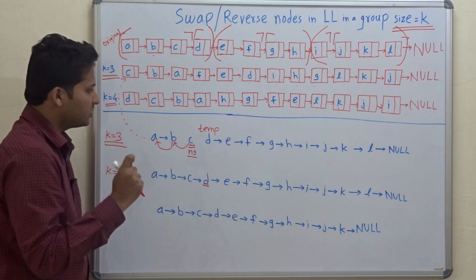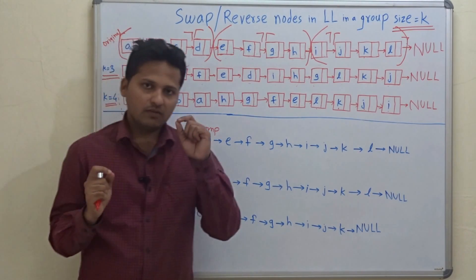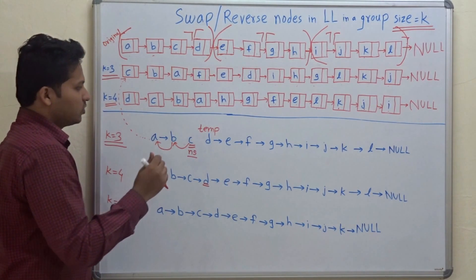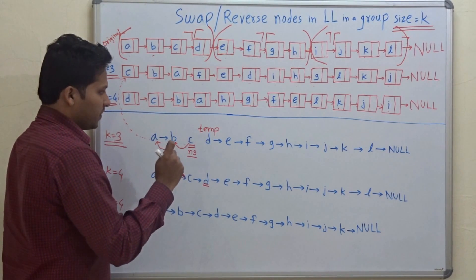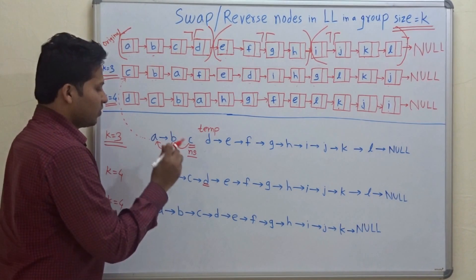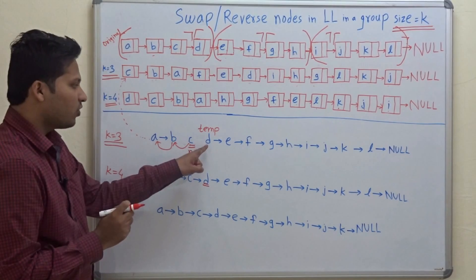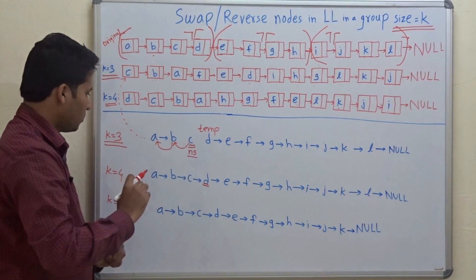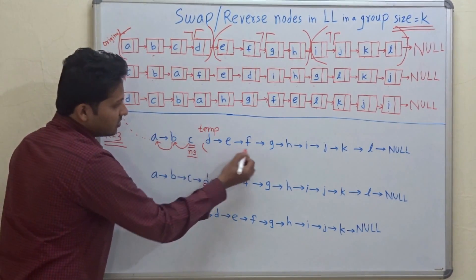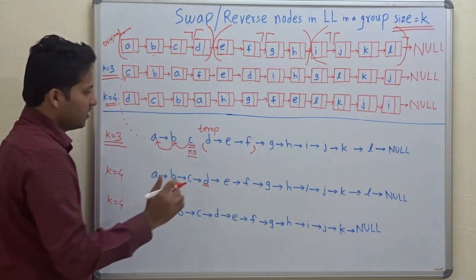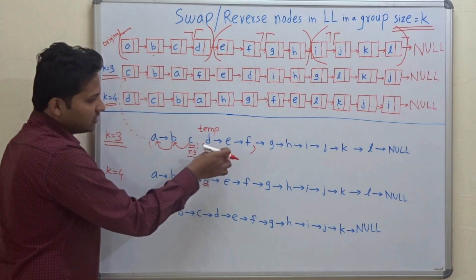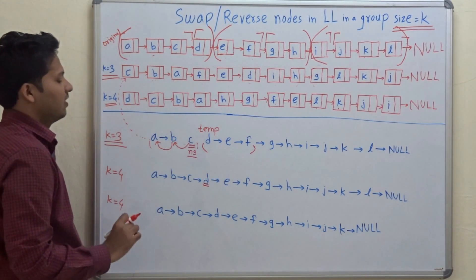We have to store the address of the k+1 element — that is, the first element of the next group. This is important because whenever we are reversing a group, we store the address of the first element of the next group in a temporary variable. See, this is our first group and D is the first element of the next group. So we store D's address in temp before we change the pointers.